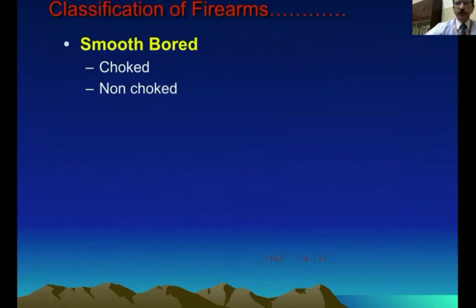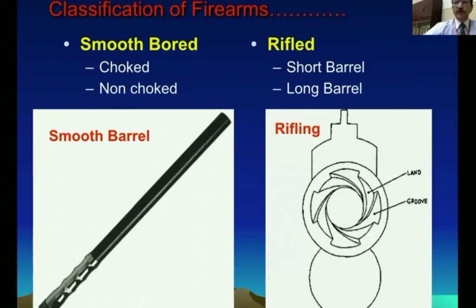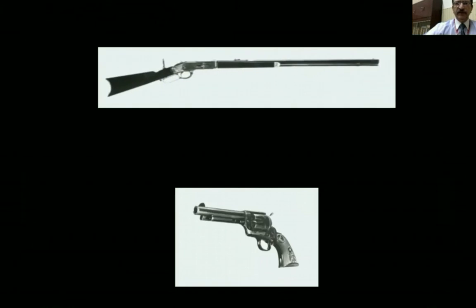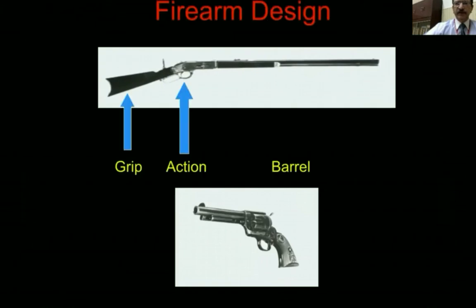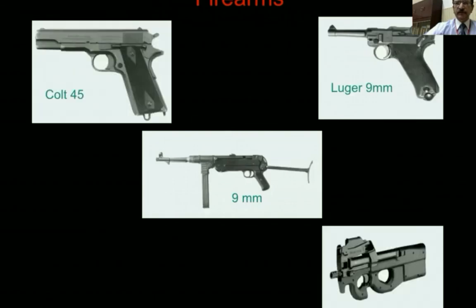Smooth bore weapons can be choked or non-choked: choking reduces the caliber slightly towards the muzzle end, while non-choked weapons lack this feature. The rifled weapon may have a short or long barrel. The diagram on the left shows a smooth bore muzzle, while the right side shows rifling with visible spiral grooves. Various weapon designs share three main portions: the action, the grip, and the barrel.